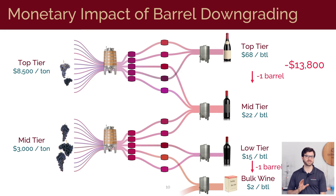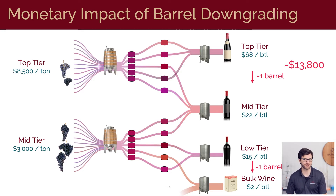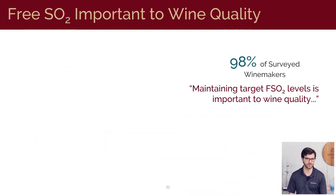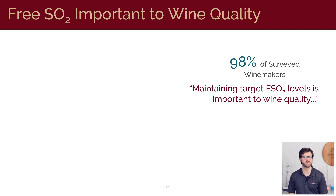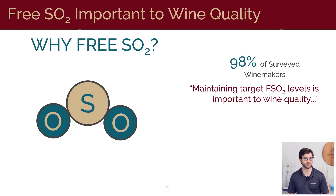Now I know that free SO2 is not responsible for all barrel downgrades — some are stylistic decisions or perhaps based on oak characteristics or market factors — but we do know that there is a relationship between free SO2 and wine quality. To exemplify that, we surveyed 70 winemakers from all around the world, and 98% of them agreed that maintaining target free SO2 levels is important to wine quality when barrel aging.